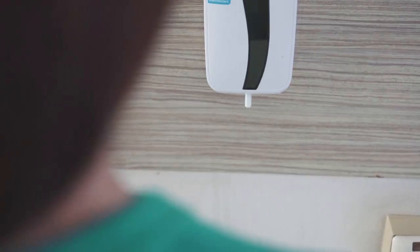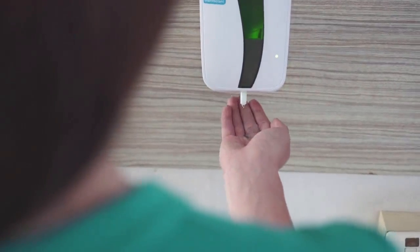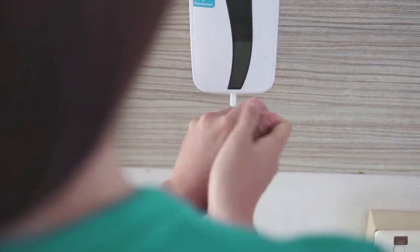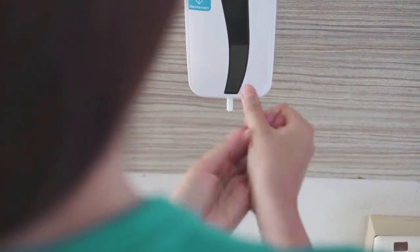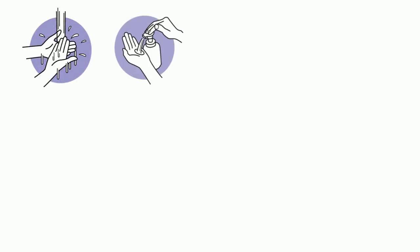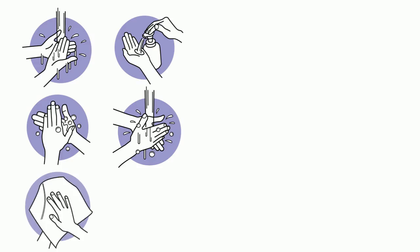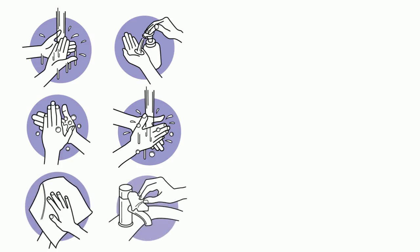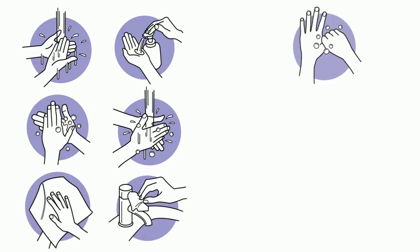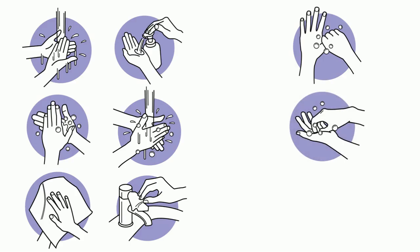When using alcohol-based hand sanitizer, put product on hands and rub together until hands feel dry, making sure all surfaces of your hands are covered. When washing with soap and water, wet your hands with water, apply soap, and rub hands together vigorously for at least 15 seconds. Rinse hands with water and use a disposable towel to dry them. Use the towel to turn off the faucet. Be sure to clean the three areas most often missed: thumbs, fingertips, and between fingers.